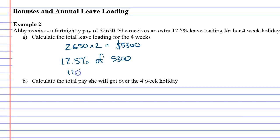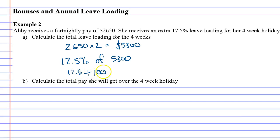We take the percentage and divide it. Actually, that's a good point to make — when you type into your calculator, a lot of people make the mistake of pushing the percentage button. Be very, very careful with that. Don't do it. Just treat it as a number: 17.5 divided by 100, then times it by 5300.